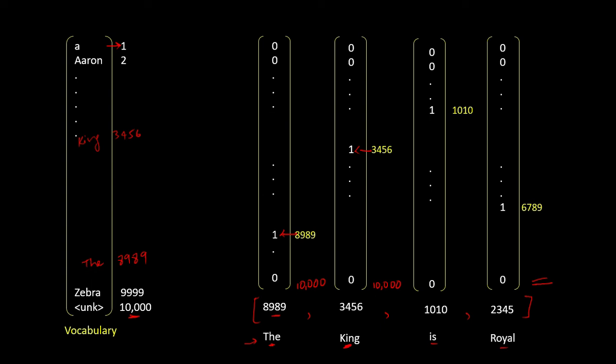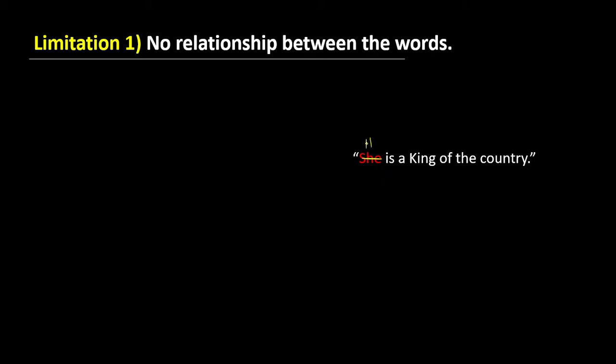But this representation has some limitations. Limitation 1 is that there is no relationship between words — it does not tell if two words are related. Let's understand this with an example. Let's say we are creating a grammar checker and we have this sentence: 'She is a king of the country.' Clearly, this is grammatically incorrect because we should have 'he' here.